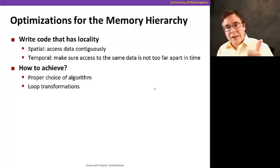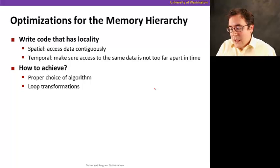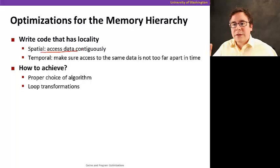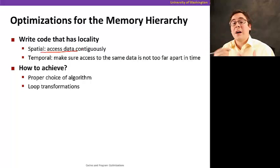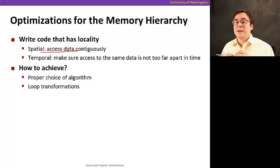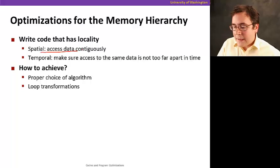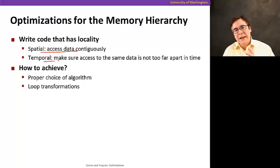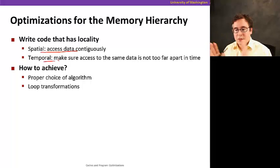There are two types of locality: spatial locality and temporal locality. For spatial locality, we want to make sure the algorithm accesses data continuously as much as possible, and even lays out data in memory in a way that increases spatial locality properties. For temporal locality, the code should make sure that if a data item is going to be accessed multiple times, try to access them closer in time.